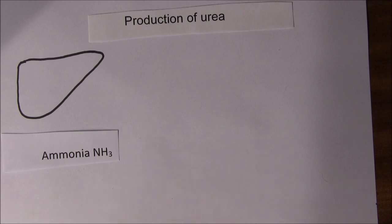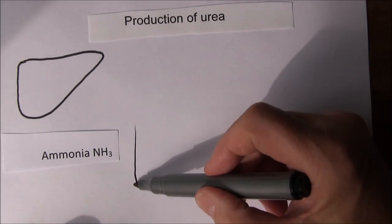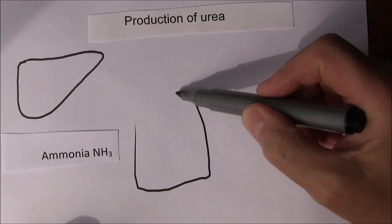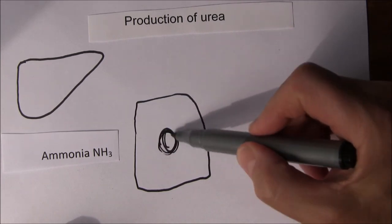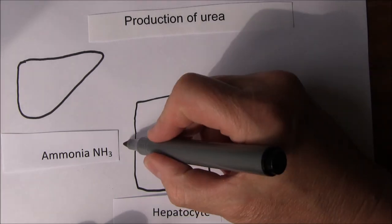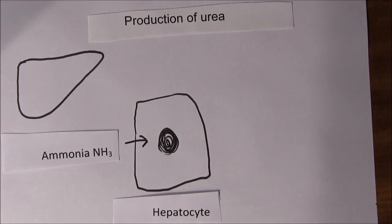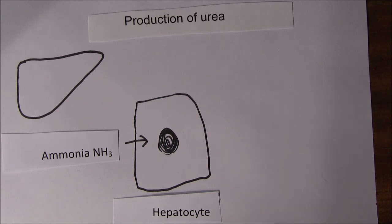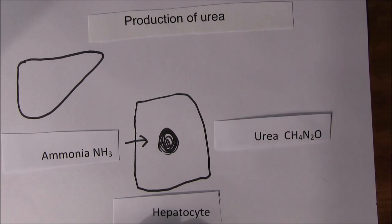So the ammonia is going to be taken up by the individual liver cells, the hepatocytes, with their nucleus. Ammonia is going to enter the hepatocytes. And what the hepatocytes do is they transform this ammonia into a much less toxic but highly soluble nitrogen containing substance or a waste product, called urea. So ammonia goes in and urea comes out.